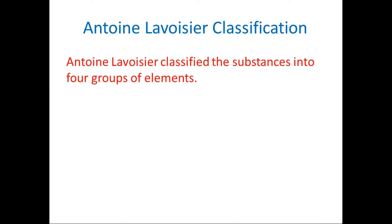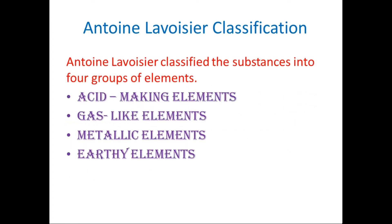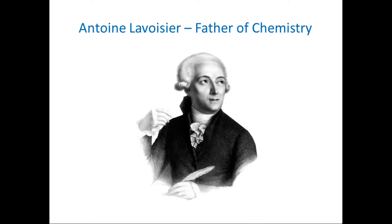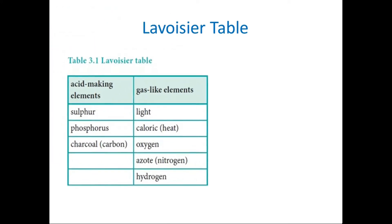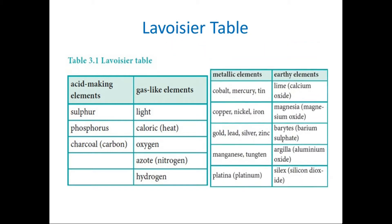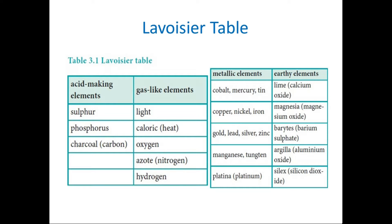Now we are going to see about 11th Chemistry Periodic Classification of Elements. First: Anthony Lavoisier's classification. There are four groups of substances — acid-making elements, gas-like elements, material-like elements, and earthy elements. Examples of earthy elements include Calcium Oxide, Magnesium Oxide, and Silicon Dioxide.